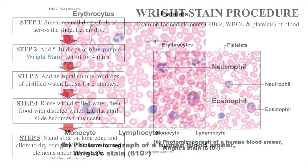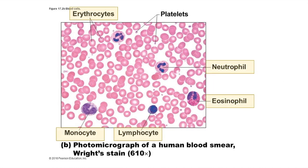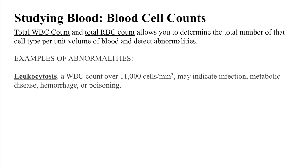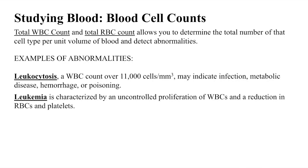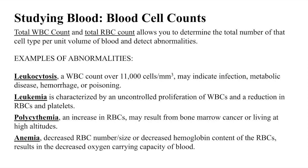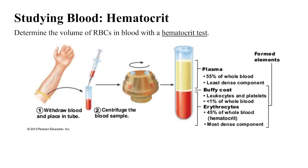The Wright stain allows you to observe erythrocytes, leukocytes, and platelets under the microscope. You can also study blood by performing total blood cell counts, which allow you to determine the total number of red blood cells or white blood cells within the blood. With this information, you can identify potential abnormalities, such as leukocytosis, leukemia, polycythemia, and anemia. The hematocrit test allows you to determine the volume of red blood cells in blood, and is routinely performed when anemia is suspected.